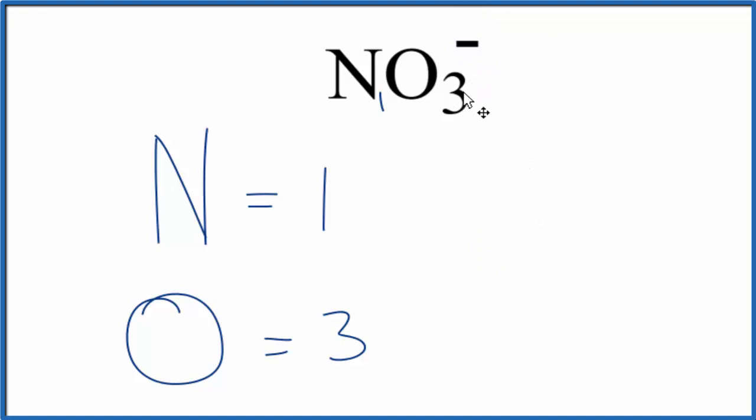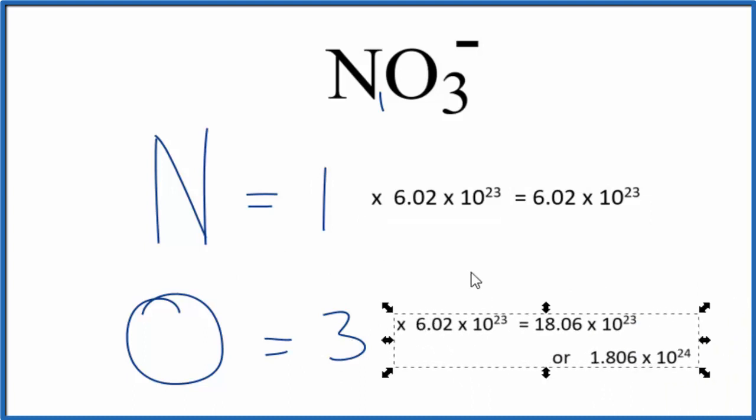If you were asked to figure out the number of atoms in one mole of nitrate ions, you just multiply the number of atoms times Avogadro's number. With oxygen, since we have three oxygen atoms, we would just multiply that by three, and that would tell us the number of oxygen atoms in one mole of the nitrate ion.